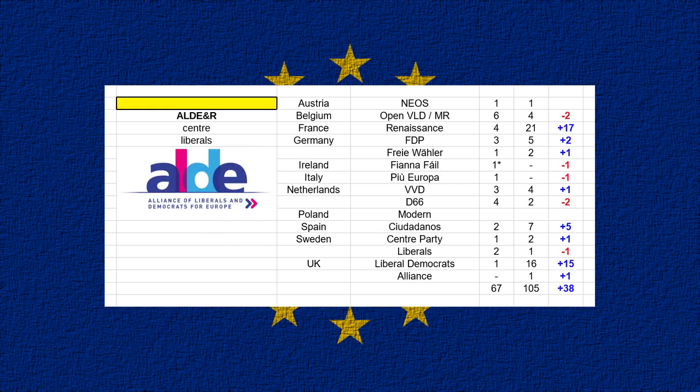ALDI and R had an overall gain of 38 seats, although most of that was centred in two countries. In France they gained 17 seats — Renaissance in France is an electoral alliance between Emmanuel Macron's La République en Marche and smaller parties, and this was their first European election. In the UK, the Liberal Democrats gained 15 seats. But given the UK may be leaving the EU, if you discount those gains, the only really significant gain was Macron's party in France, so maybe not as good a night for ALDI as some have suggested.